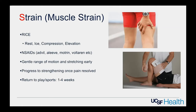You can add anti-inflammatory medications. NSAIDs — non-steroidal anti-inflammatory drugs — are a big class for orthopedic surgeons. These include Advil, Aleve, Motrin, Naproxen, Ibuprofen, Voltaren, Celebrex, and Meloxicam. All are in the same class of anti-inflammatory medications that work really well for muscle and bone injuries.